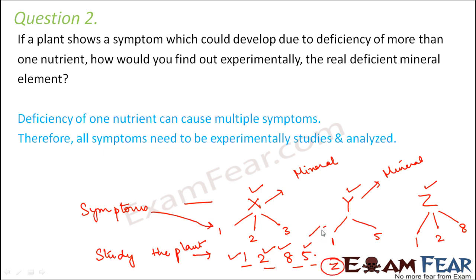So that means you need to analyze: first, what all symptoms are present in the plant; then make a list of all the symptoms associated with a particular mineral; and then, looking at the symptoms of the plant, determine which should be the deficient mineral.